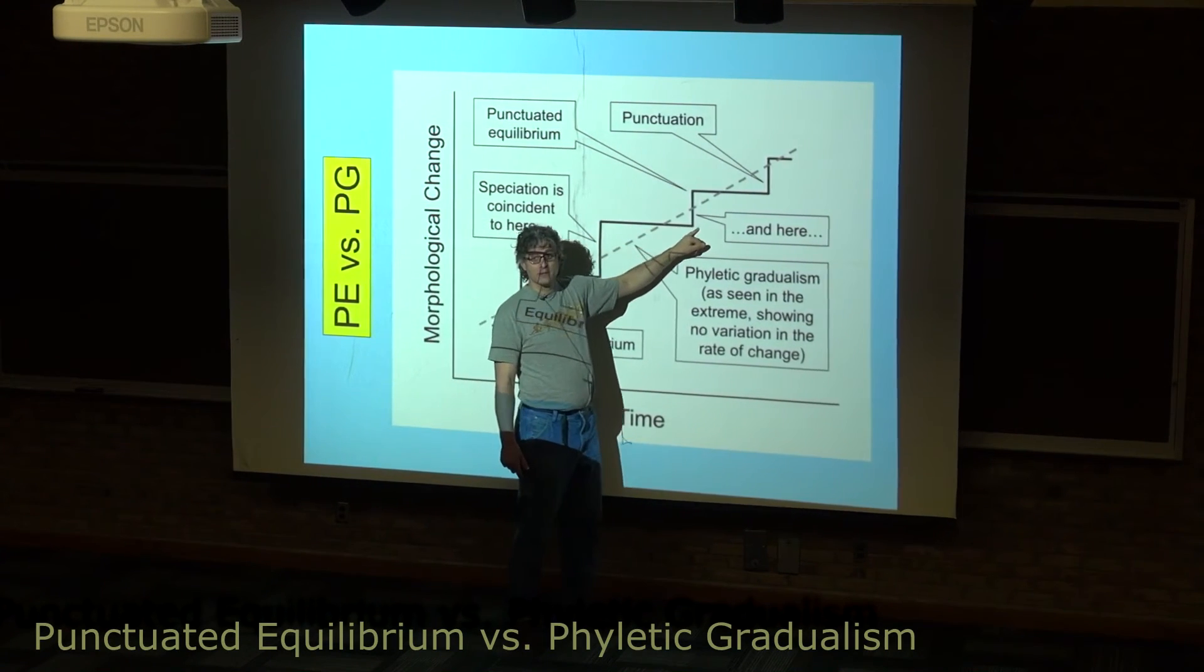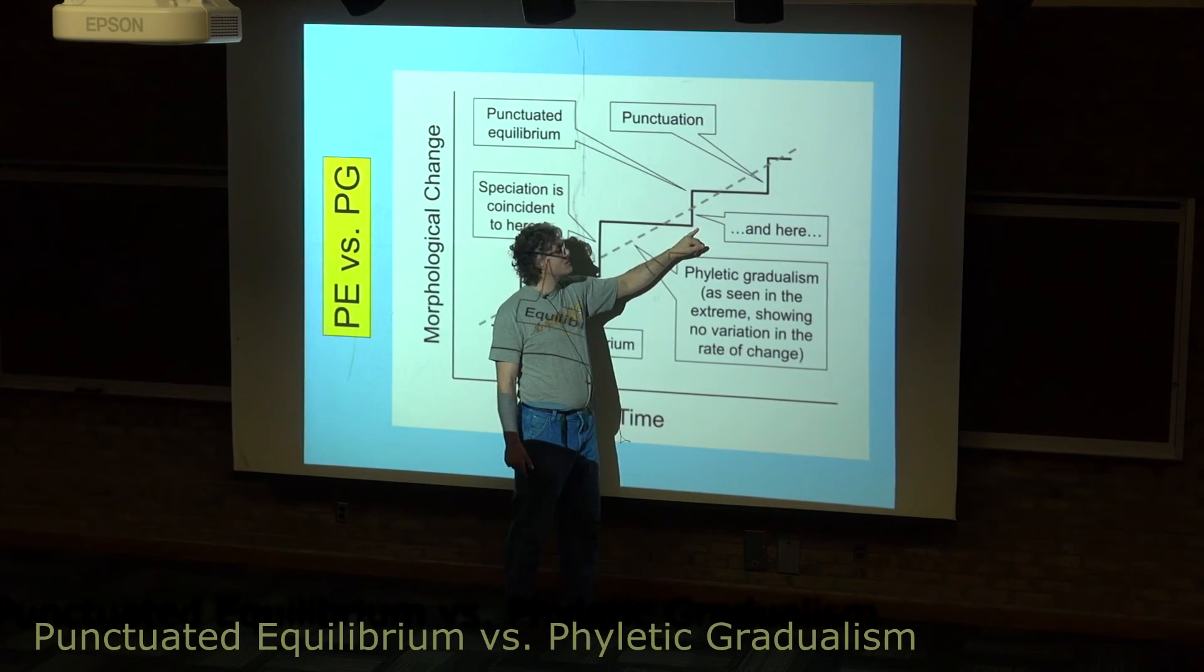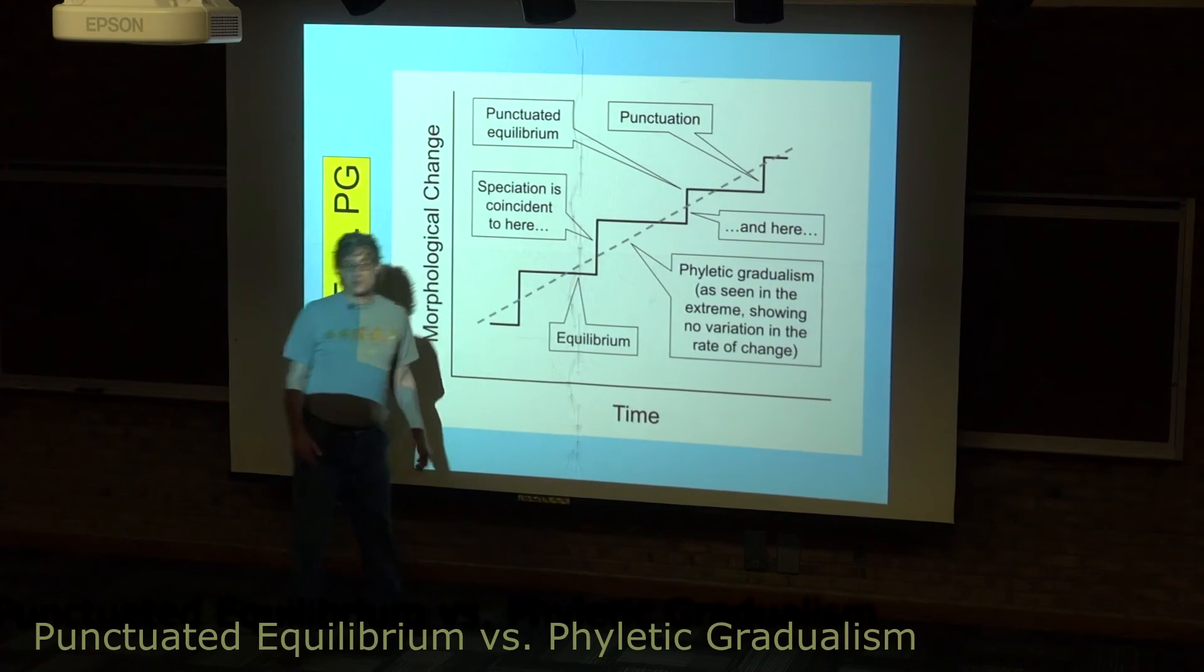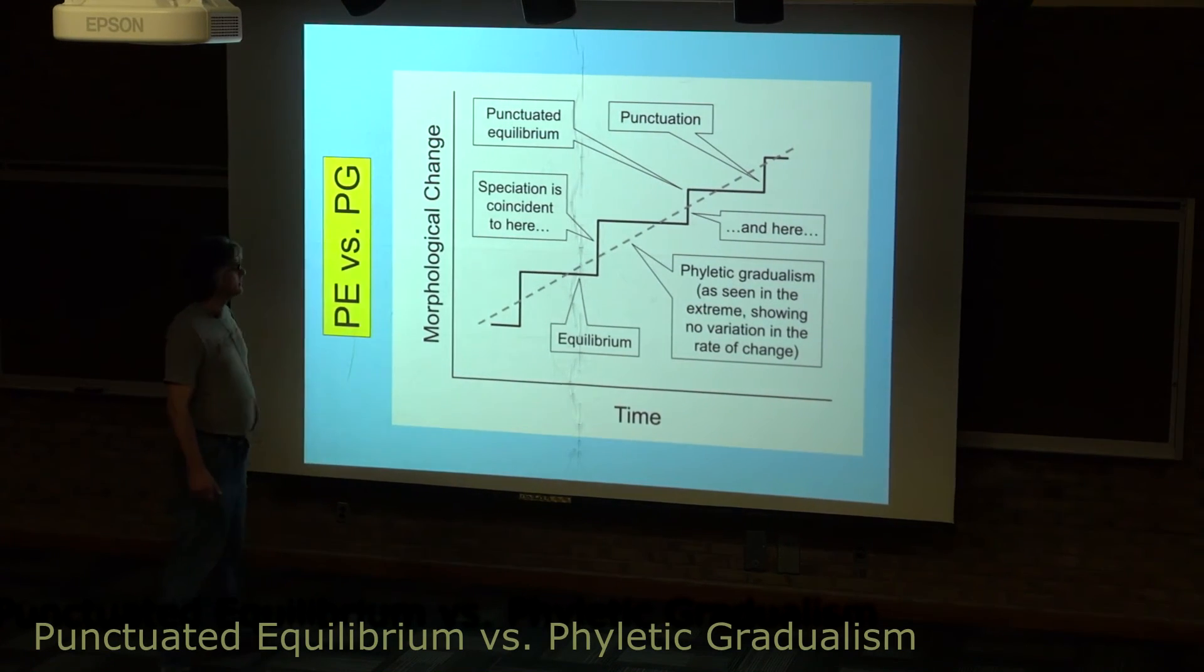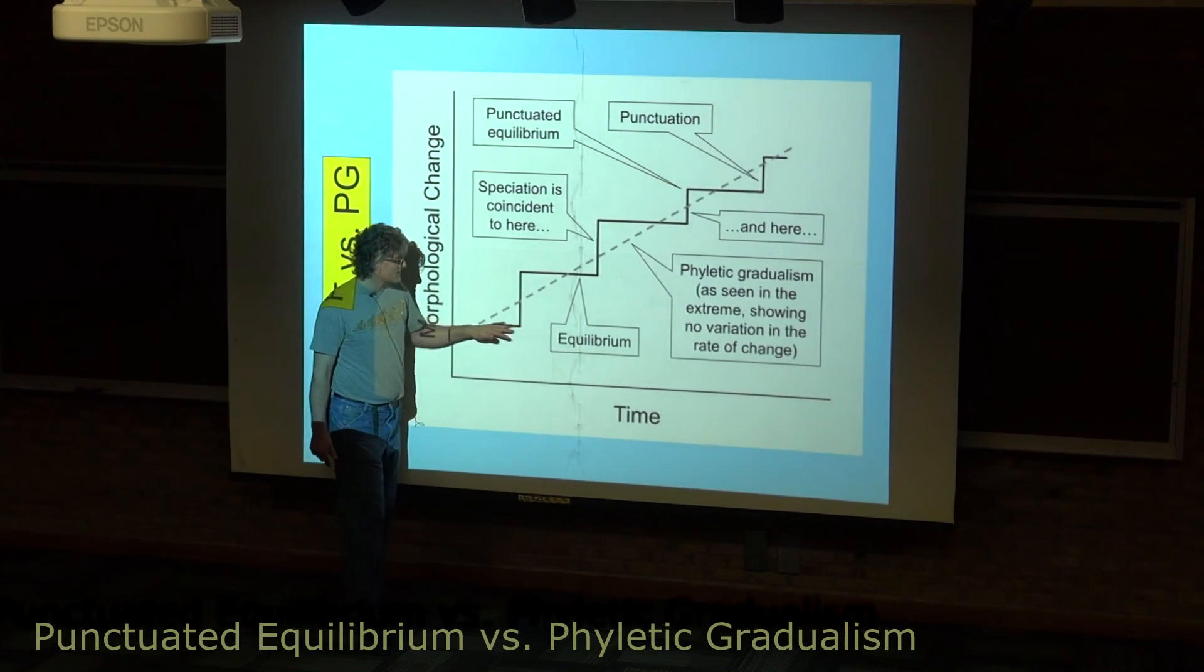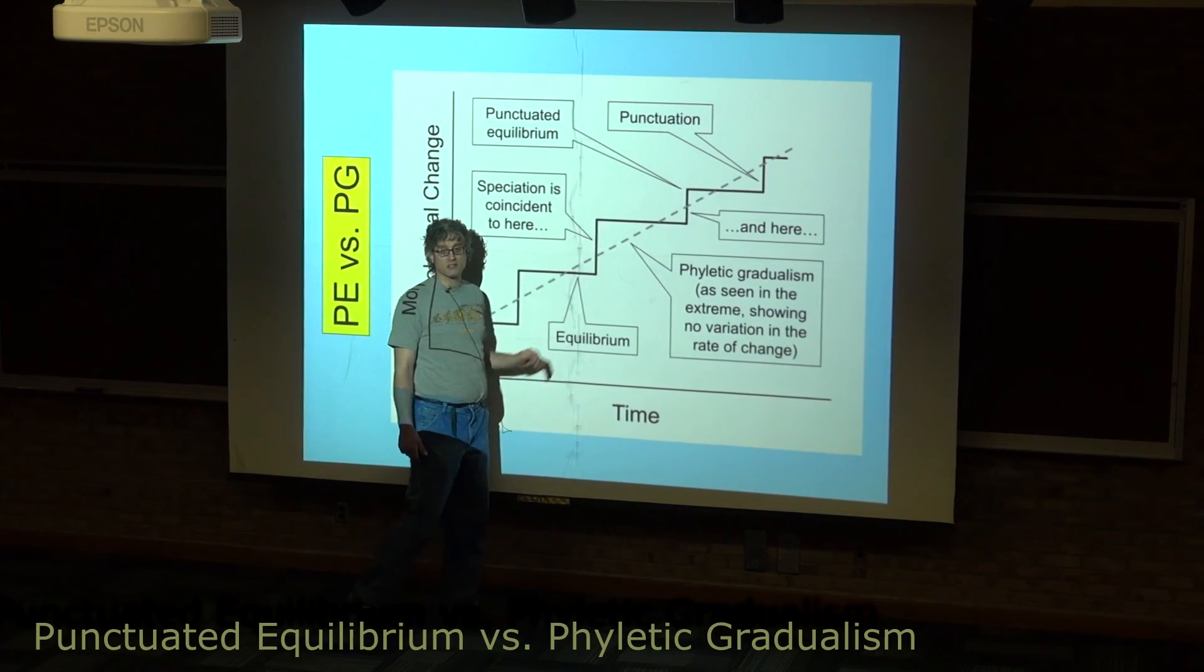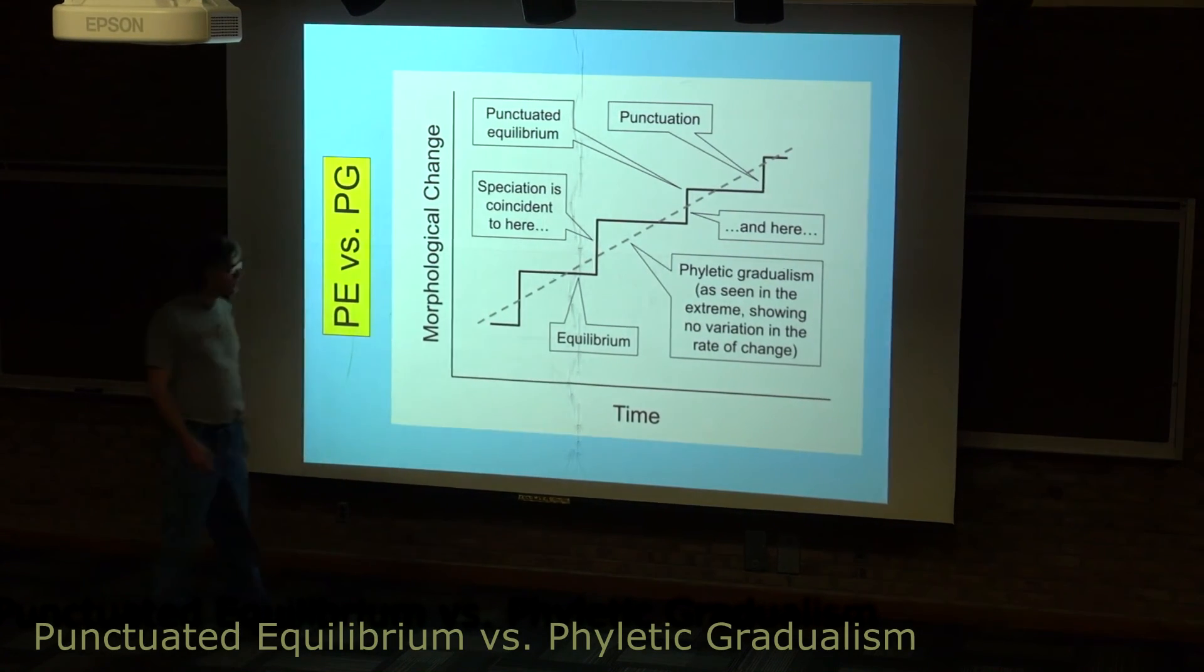This is followed by periods of stasis where the population is larger and not changing much, and so on. So you have this large amount of variance—going from basically no change to very fast change, no change to very fast change. That's called punctuated equilibrium.